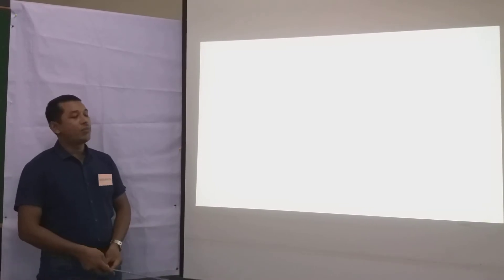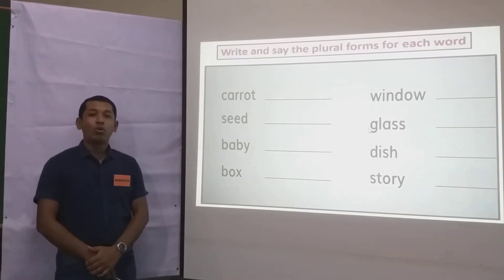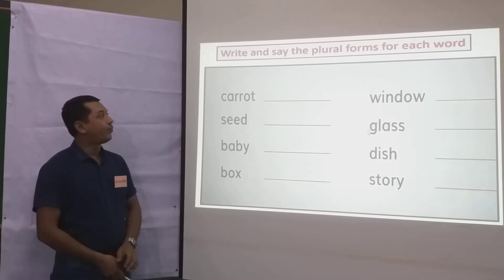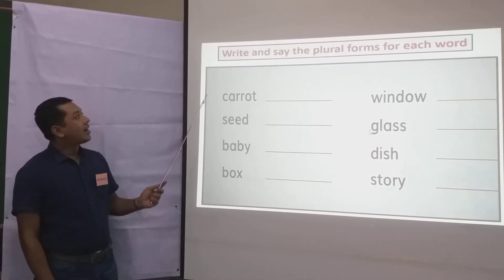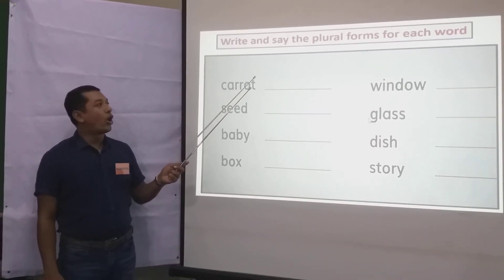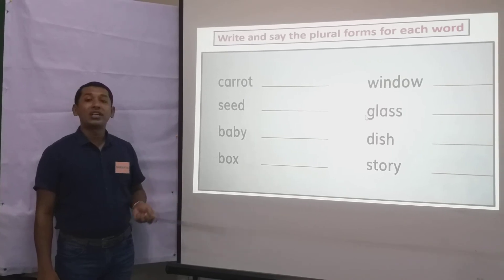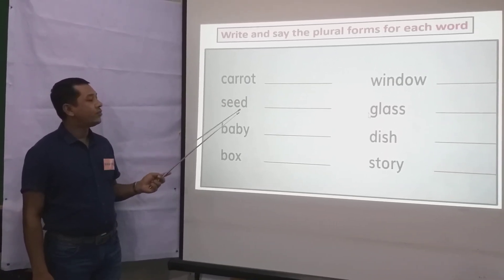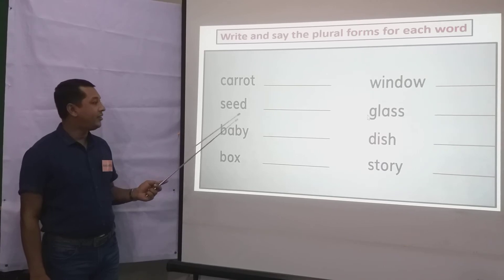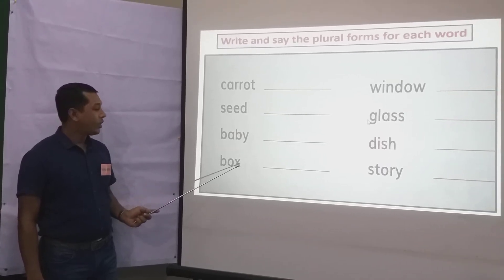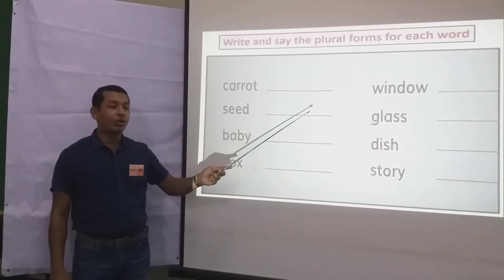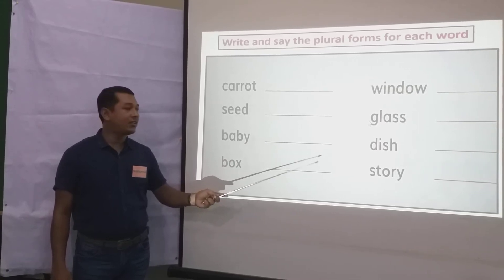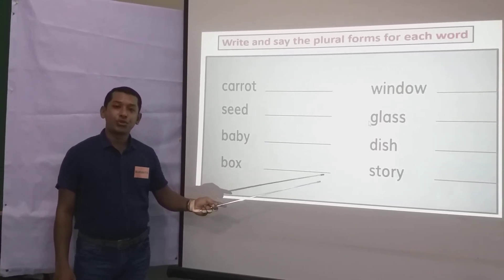Okay, my dear students, now we are going to Activity B. Write and say the plural forms for each word. Here we have: carrot, seed, baby, box, window, glass, dish, and story.